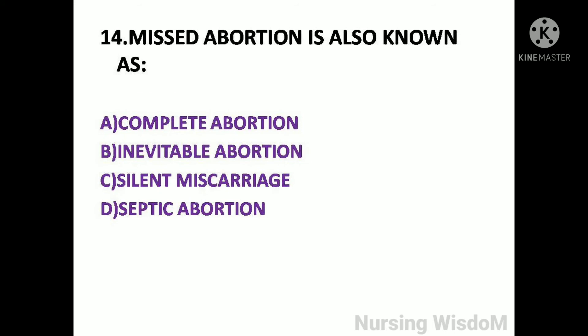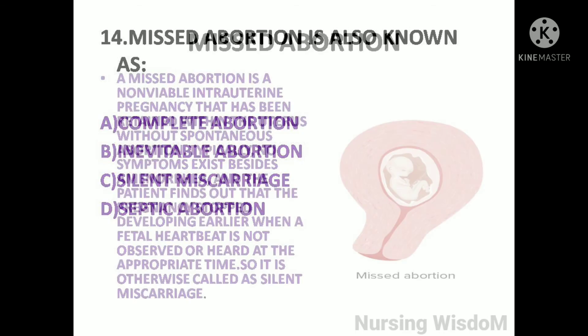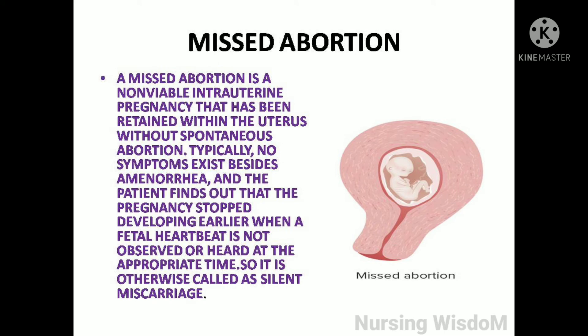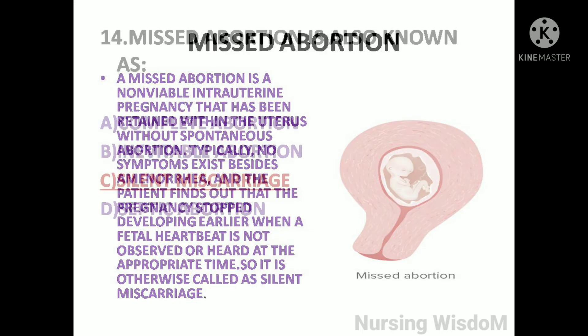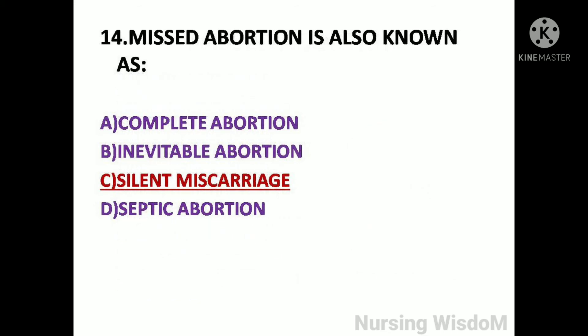Next question: Missed abortion is also known as — option A: complete abortion; option B: inevitable abortion; option C: silent miscarriage; option D: septic abortion. A missed abortion is a non-viable intrauterine pregnancy that has been retained within the uterus without spontaneous abortion. Typically no symptoms exist besides amenorrhea, and the patient finds out that the pregnancy stopped developing when a fetal heartbeat is not observed or heard at the appropriate time. So it is otherwise called a silent miscarriage. So here the answer is option C, silent miscarriage.